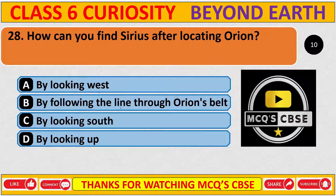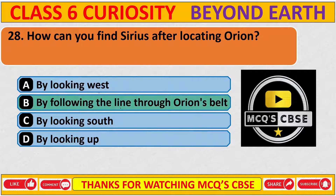How can you find Sirius after locating Orion? The correct answer is B, by following the line through Orion's belt.